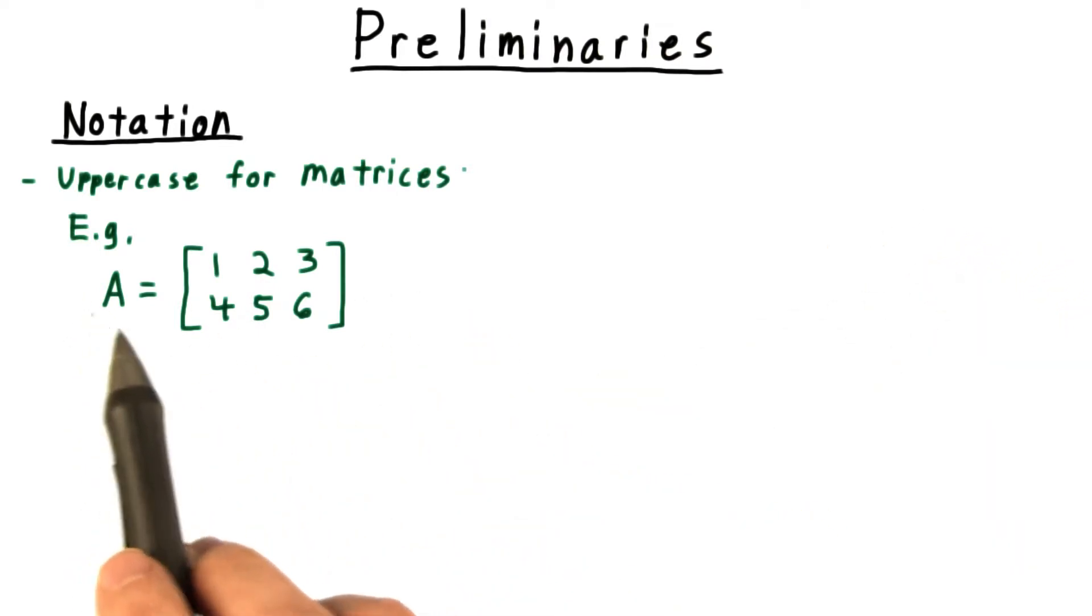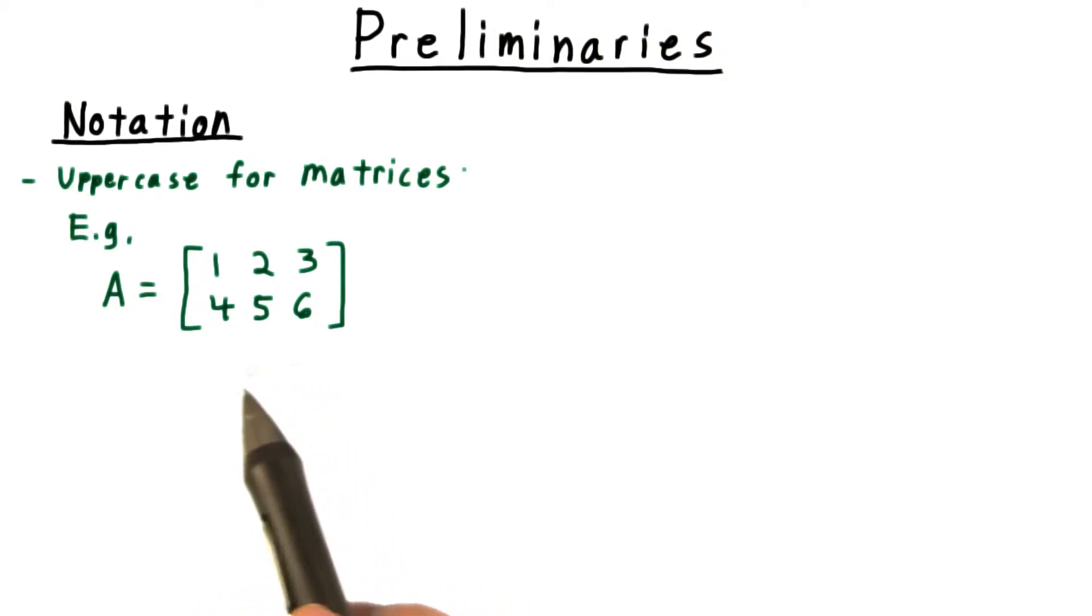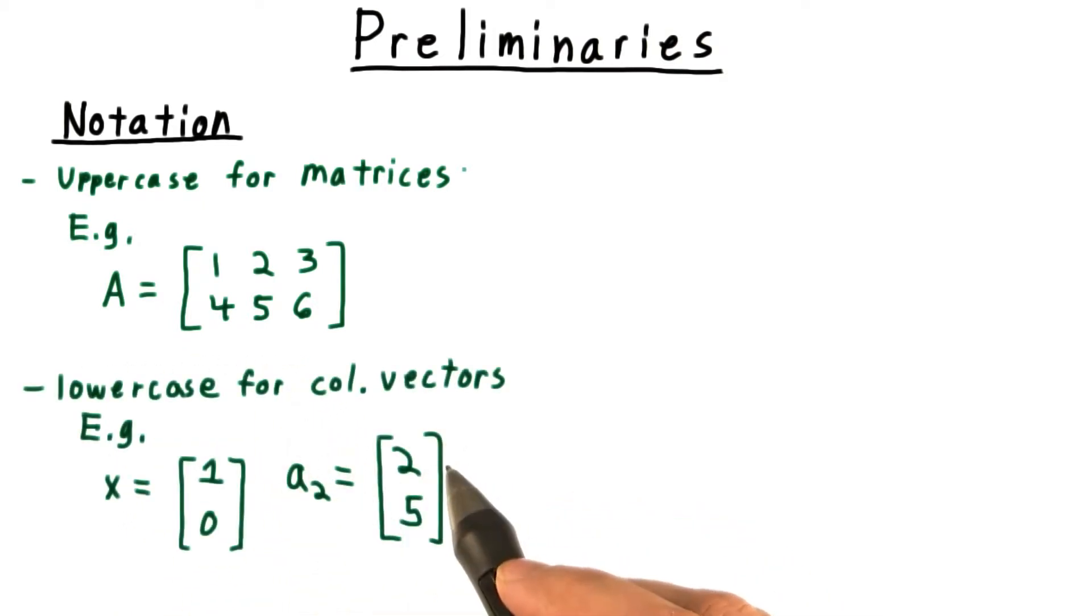For notation, we will use capital letters for matrices. Thus, A might be this matrix here. For column vectors, we'll use lowercase letters. So x might be this vector here.